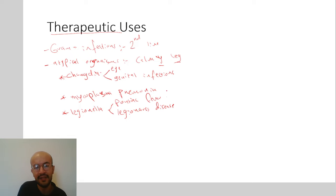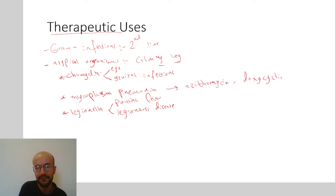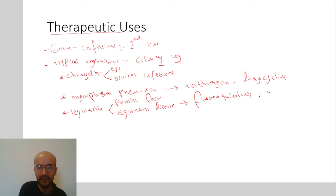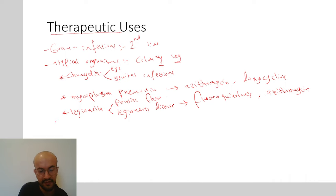Mycoplasma is treated with either azithromycin (a macrolide) or doxycycline (a tetracycline). Legionella is treated with fluoroquinolones or azithromycin.